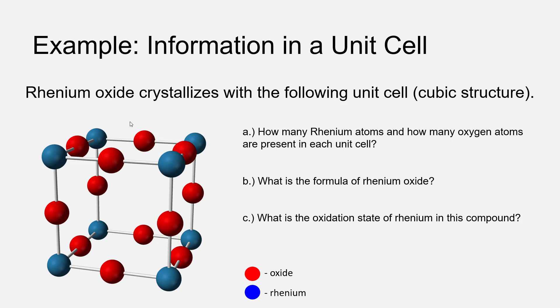The second question is, what is the formula of Rhenium oxide? Well, the unit cell has to encompass all the major features of the compound, including enough information to find its empirical formula. So if there's one Rhenium atom and three oxygen atoms inside the unit cell, we conclude that the empirical formula for Rhenium oxide is ReO3. Three atoms of oxygen for every atom of Rhenium, three oxide ions for every Rhenium ion.